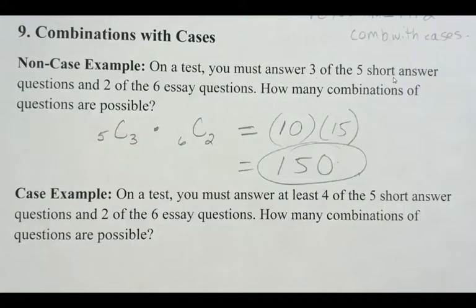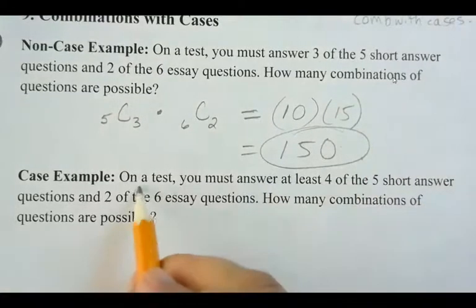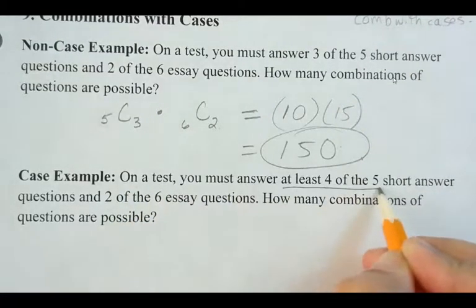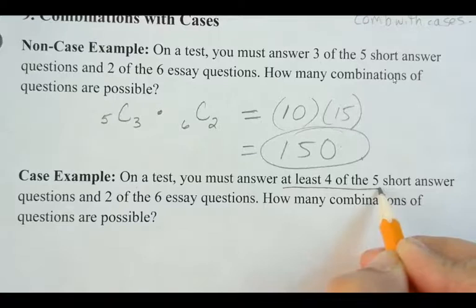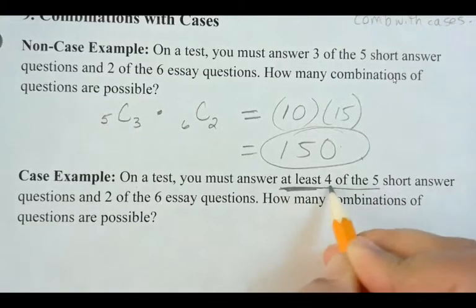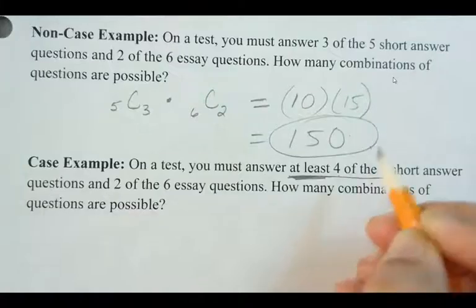Now, this is where our case example happens now. Here we have, on this test, we have to answer at least four of the five short answer questions. So that's really where our cases are gonna come from. Okay, where it says at least here, so you could either answer 4 out of 5 or 5 out of 5. Exactly.